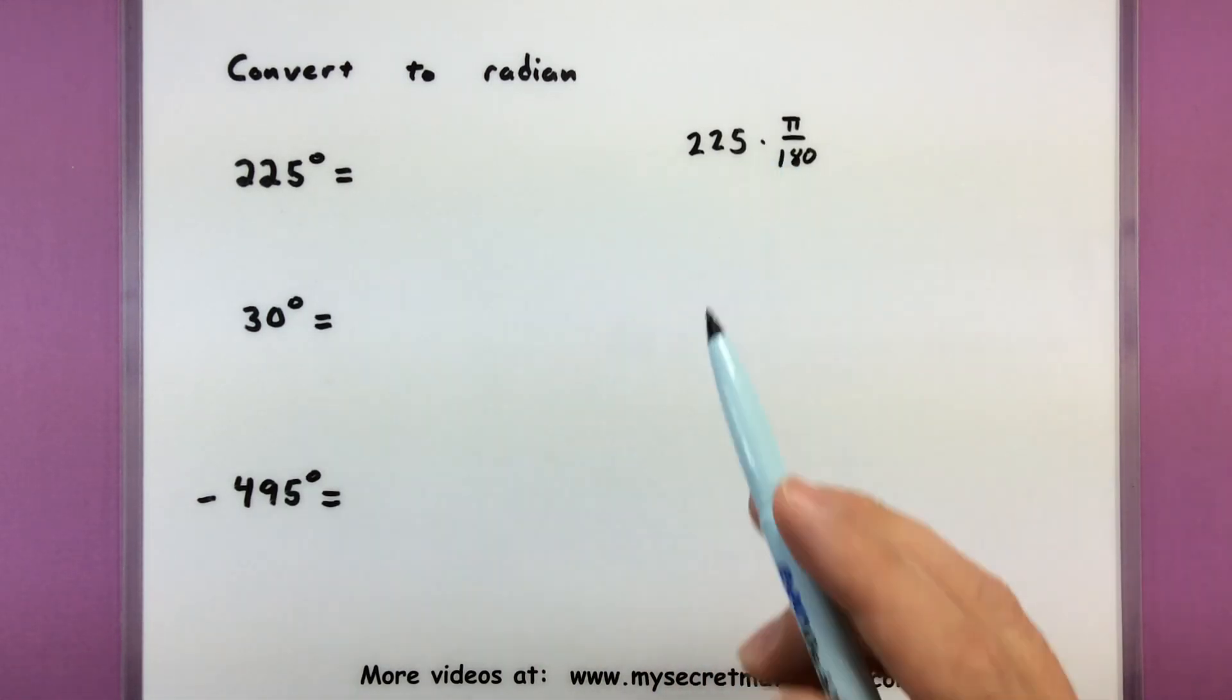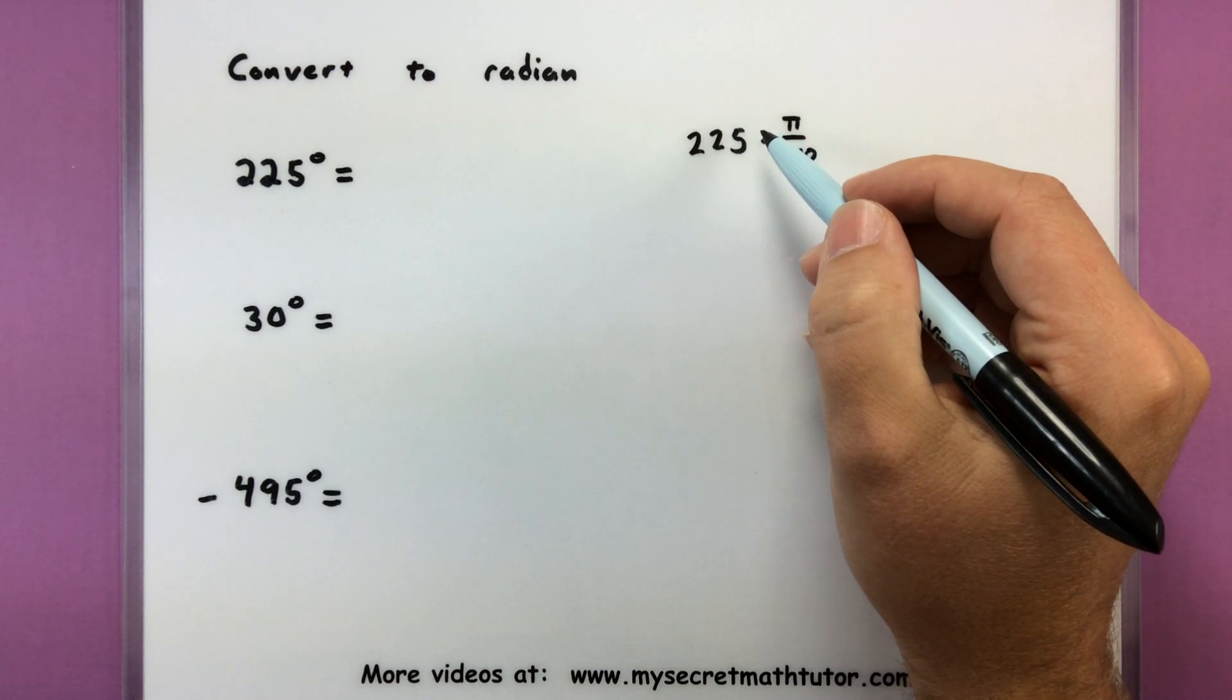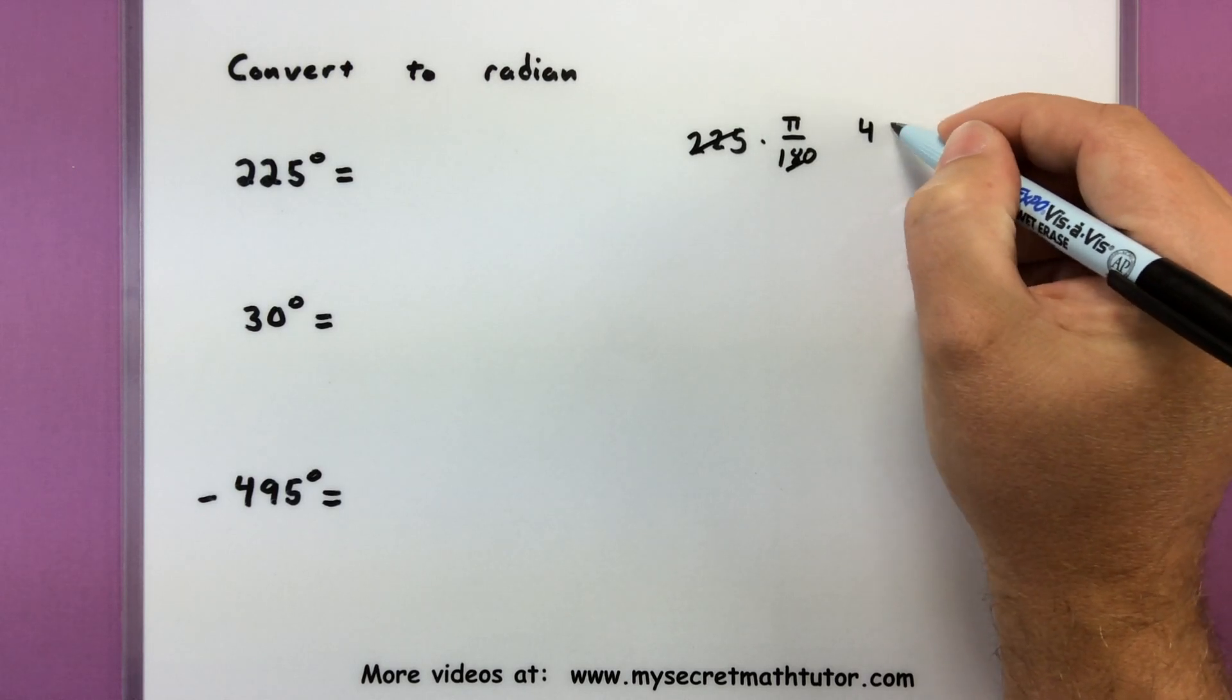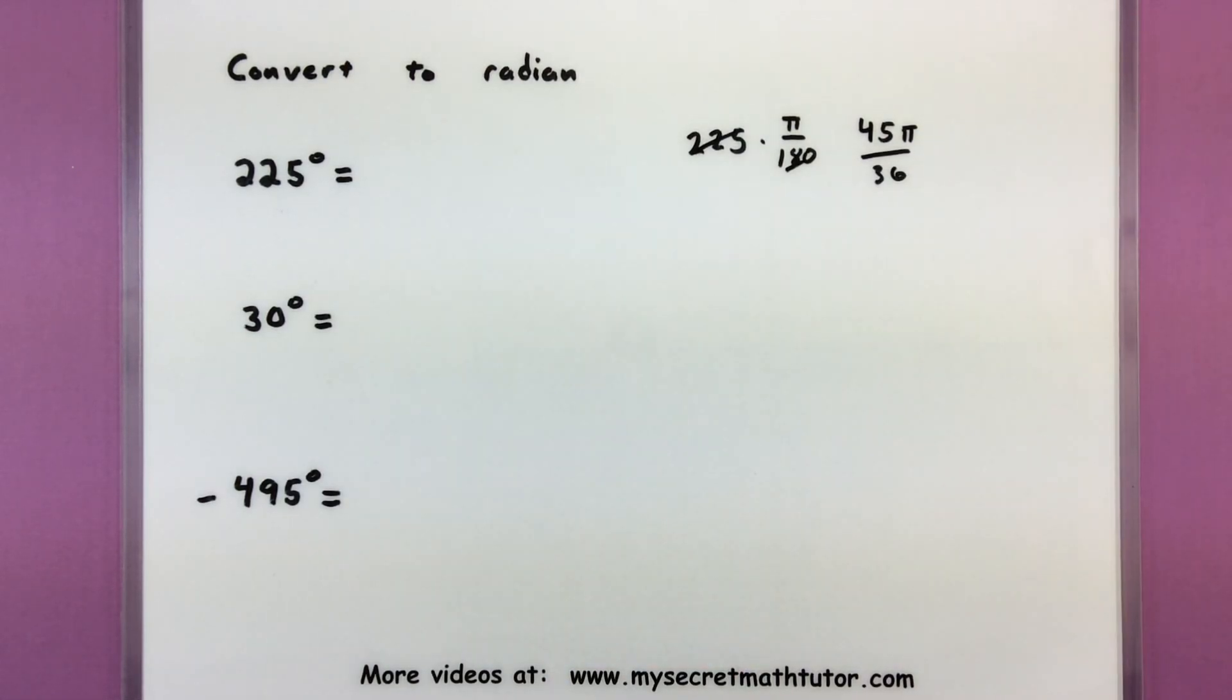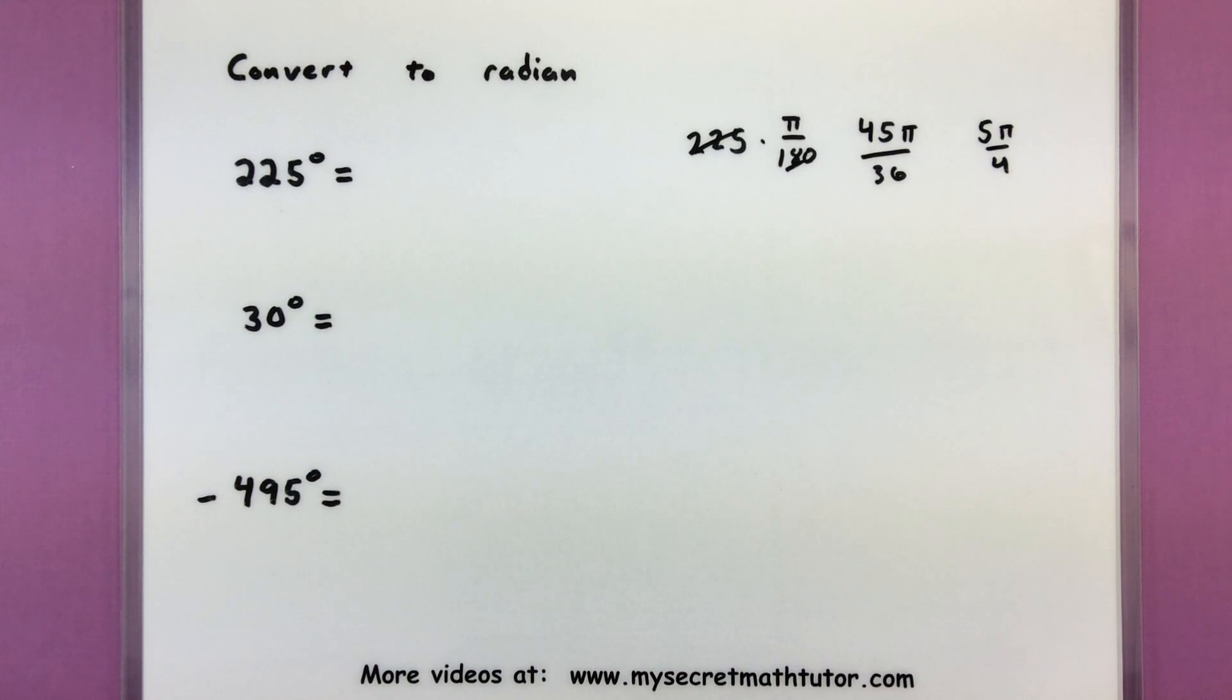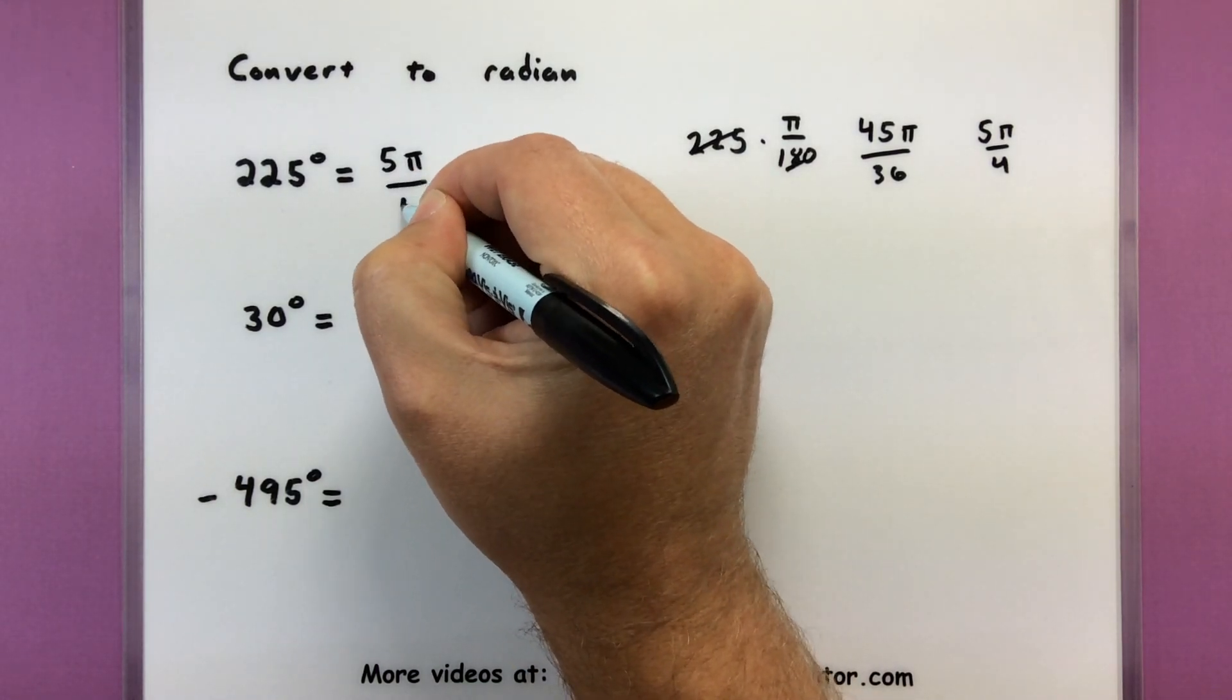Now, there's nothing really that pi is going to end up simplifying with, so when going in this direction, usually you're just simplifying the other numbers. So I think we can go ahead and cancel out a 5 in there, so that'd be 45 over 36. I think we can also cancel out a 9, that'd give us 5 pi over 4. And then nothing else cancels, so there's our radian measure, 5 pi over 4.